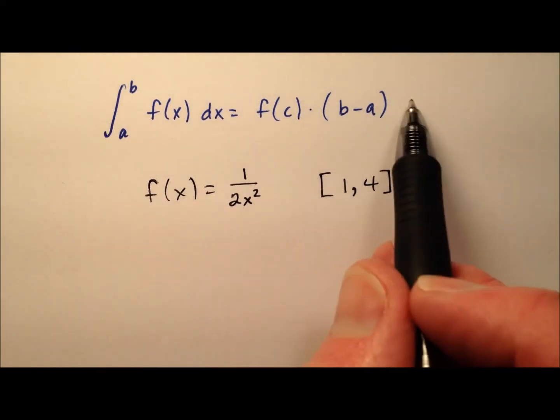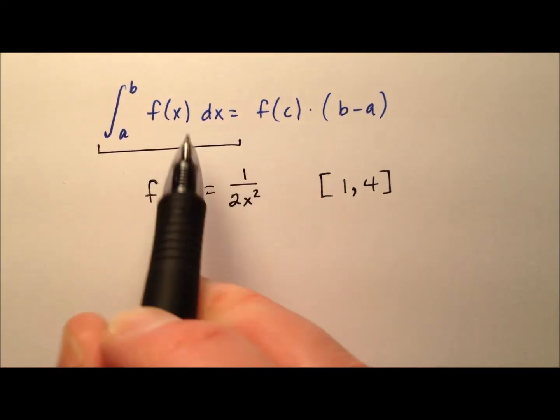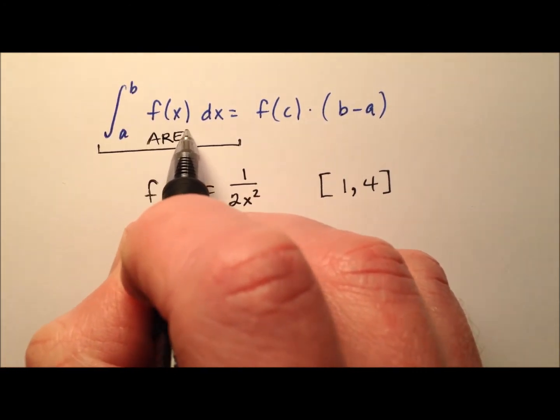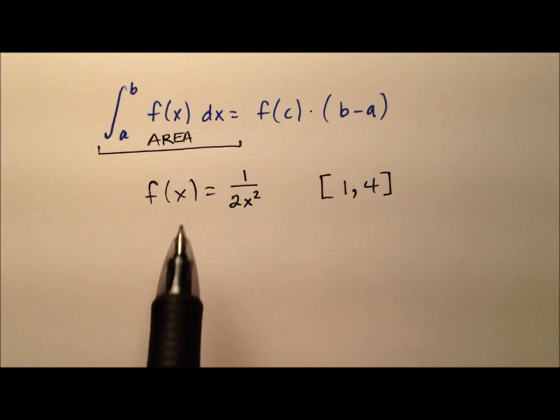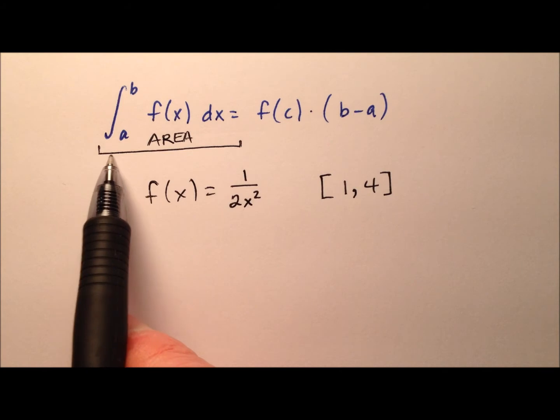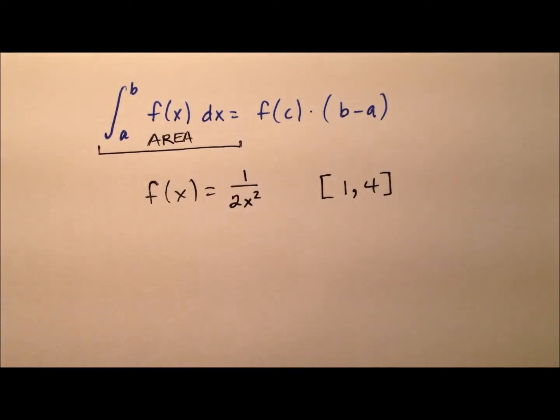Looking at this mean value theorem, this left side is going to be a definite integral. And when I solve that definite integral, it's going to give me an area. And that area is going to be bound above by the graph of this function region, and below by the x-axis. So let's go ahead and take a look at that graph and also what that region is going to look like.